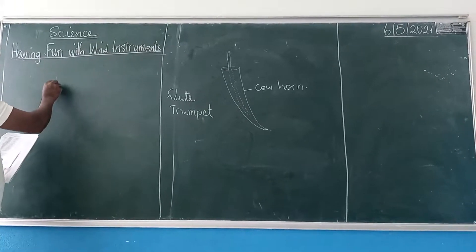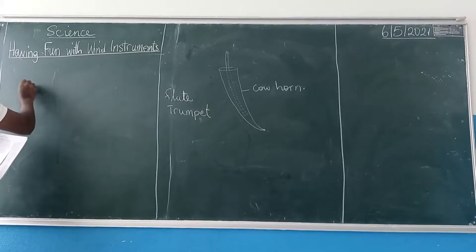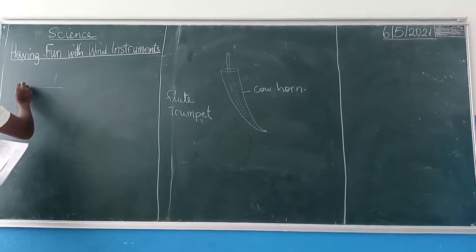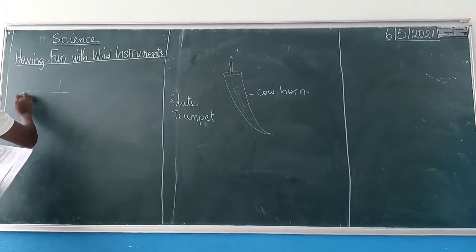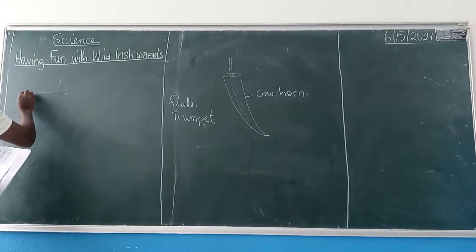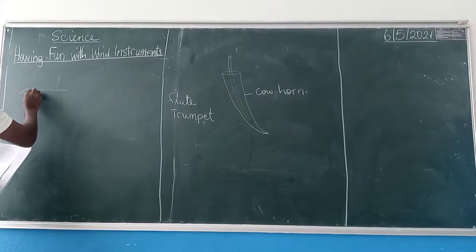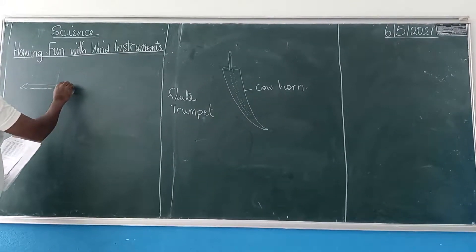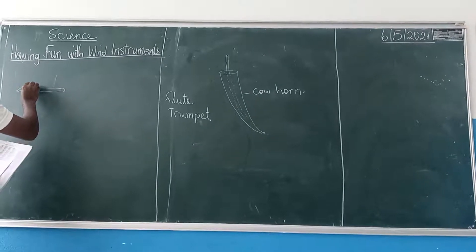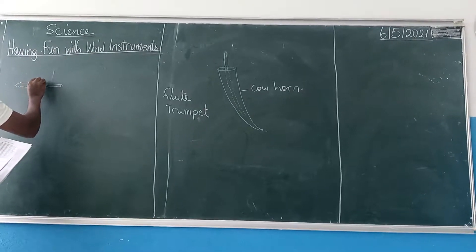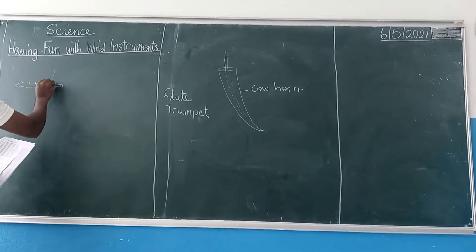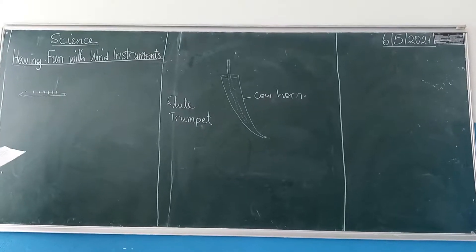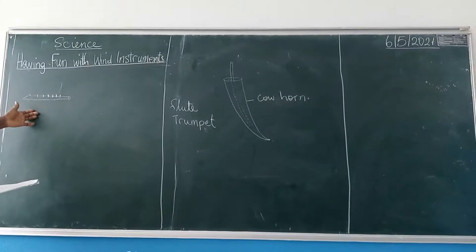They have holes. Like this is the wood or the plastic, which is an instrument like flute. And then they have small, small holes, like that, small holes. That is an example of a flute.